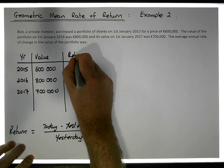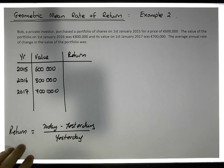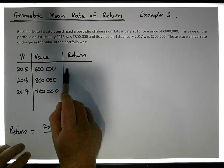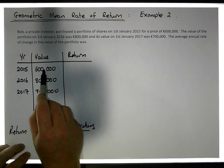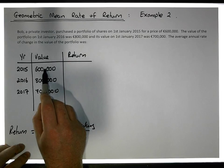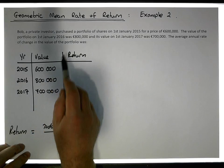The return in 2015 would require that we have today's price which is 600,000, but also the value of the portfolio in 2014, which we don't have. So we cannot calculate the return for 2015.